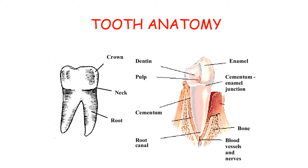The portion of the tooth that you can see in your mouth is called the crown, and the portion that is embedded in the bone and covered by your gums is called the root. Both are separated by a line known as the cementoenamel junction or the cervical line. It is called the cementoenamel junction because the crown's outer layer is made of enamel — the hardest part of the body — and the outermost layer of the root is made of cementum.